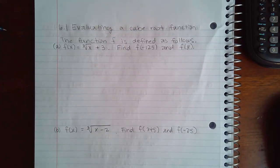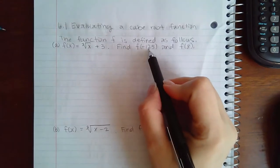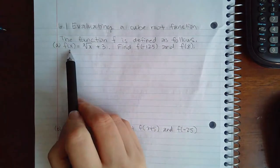Here we have evaluating a cube root function. The function f is defined as follows: f(x) equals the cube root of x plus 3. Find f(-125).